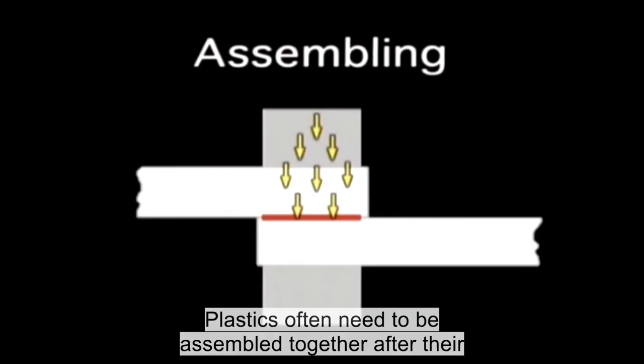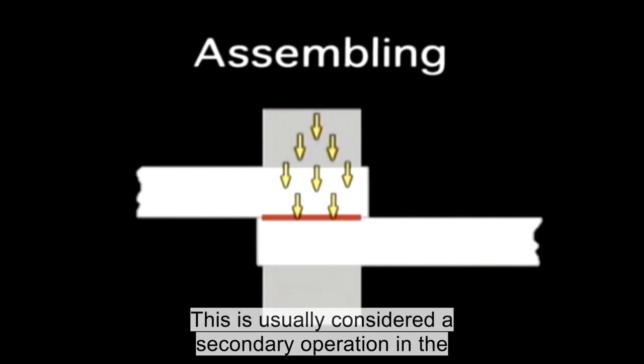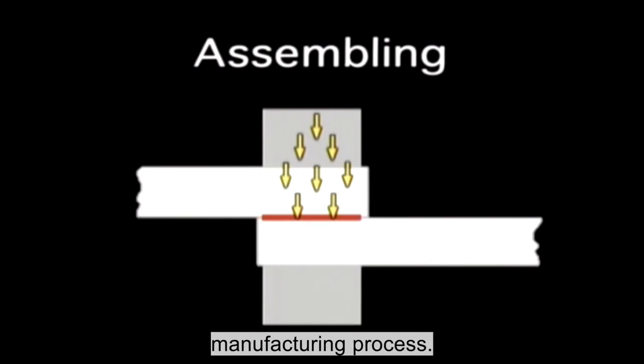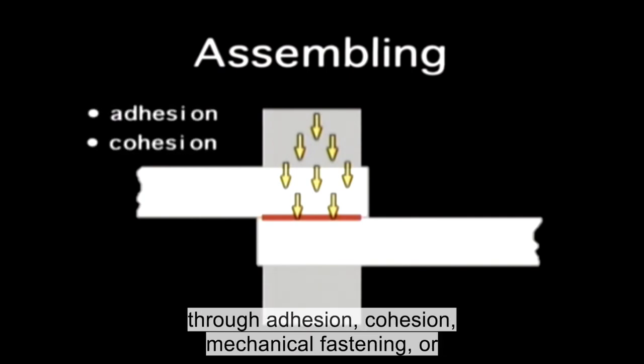Plastics often need to be assembled together after their initial manufacturing. This is usually considered a secondary operation in the manufacturing process. Assembling can be done by bonding the parts together through adhesion, cohesion, mechanical fastening or friction fitting.